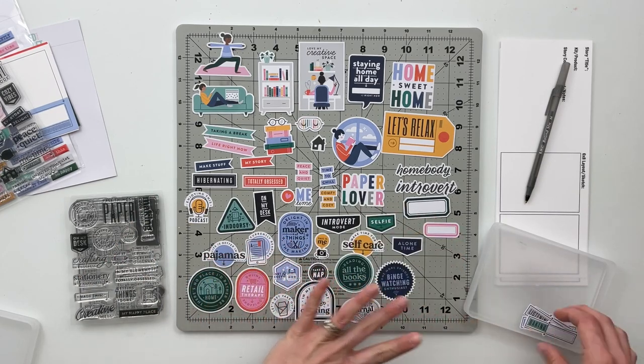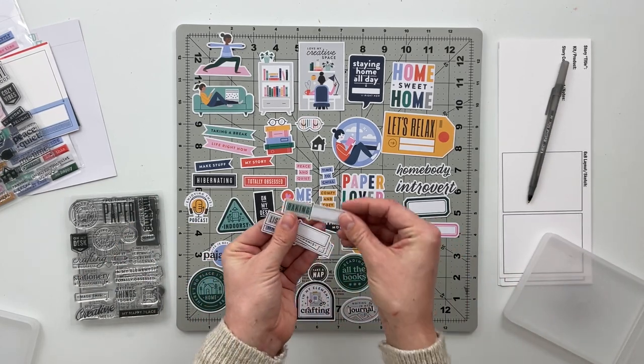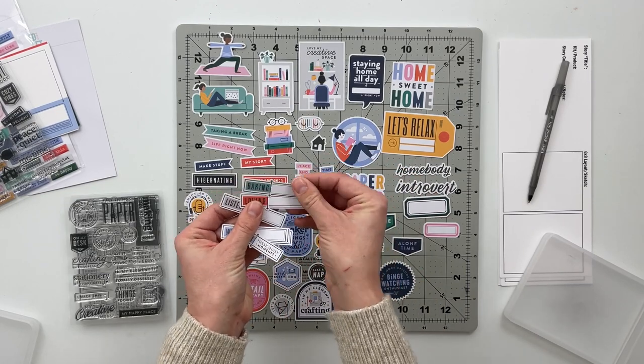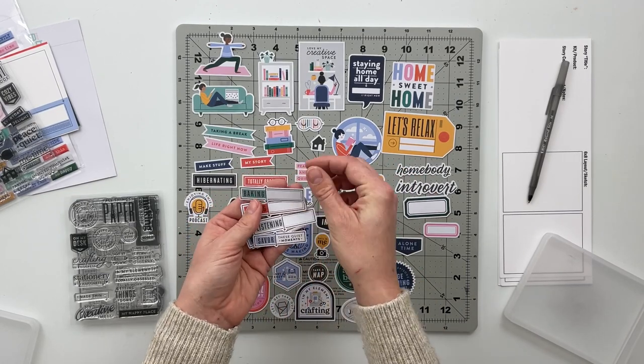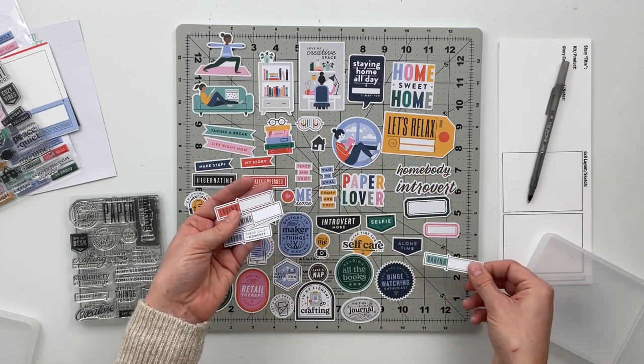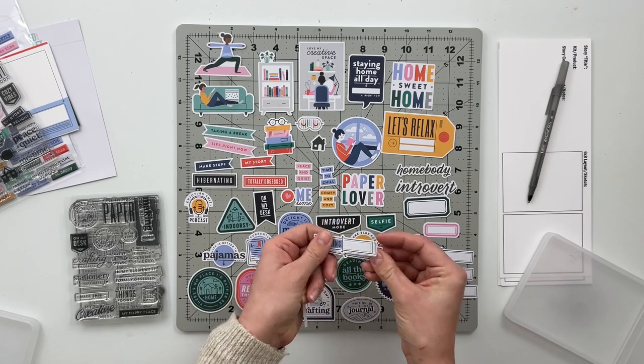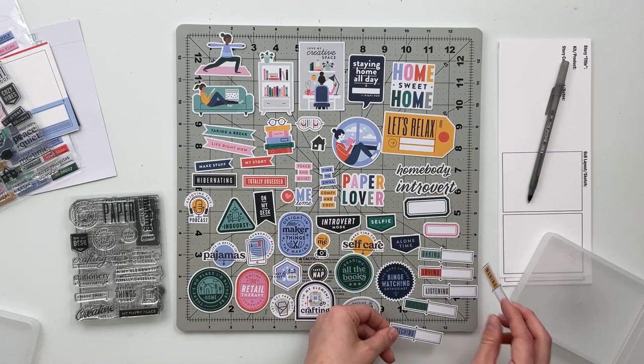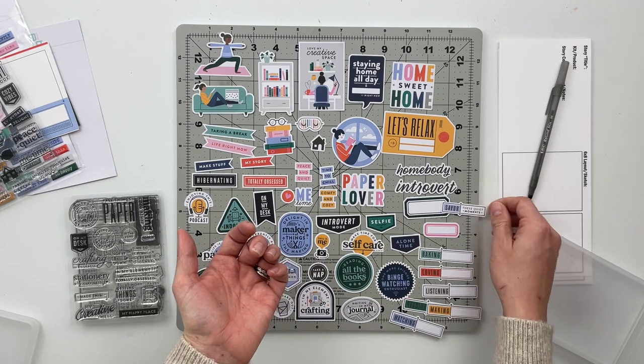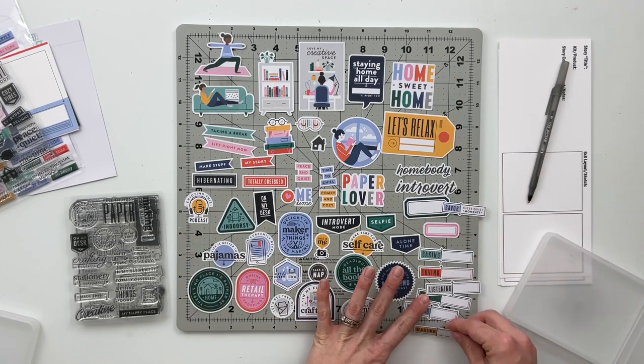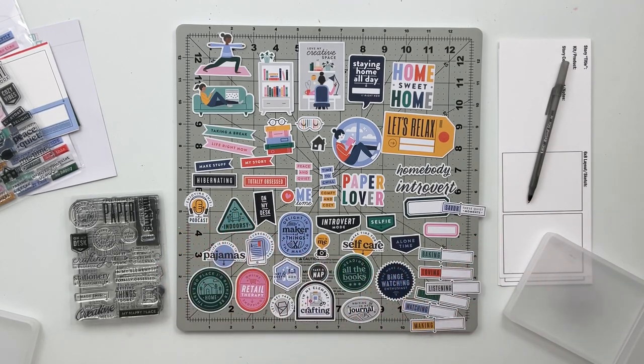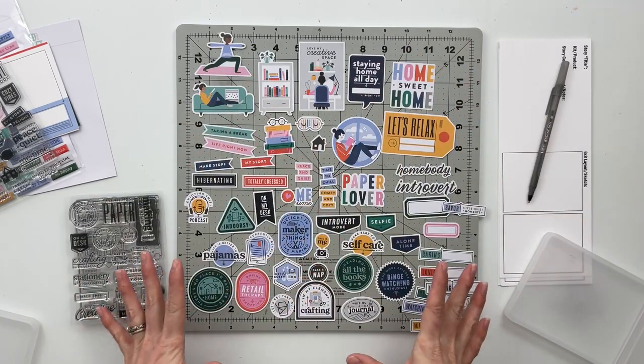And then last but not least we have a selection of these like fill in the blank type ephemera pieces. So they say baking, loving, listening, watching, making, reading, and then savor these quiet moments. So these would make an awesome currently spread I think, that's probably what I will use them for. So tons of pieces here.